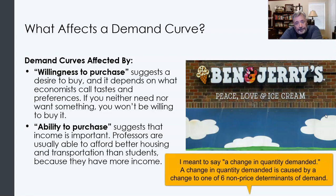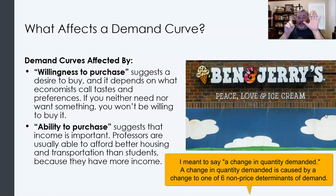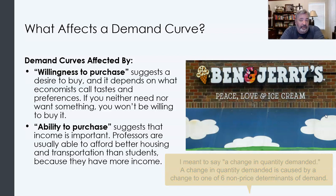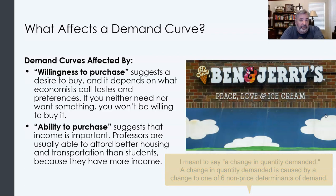A change in demand, on the other hand, is caused by a change in anything not price-related. We call these non-price determinants of demand. I generally count six, and they spell out a mnemonic device — the word INSECT — to help you remember what these are.